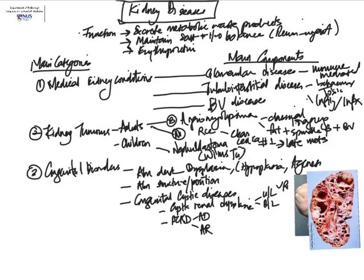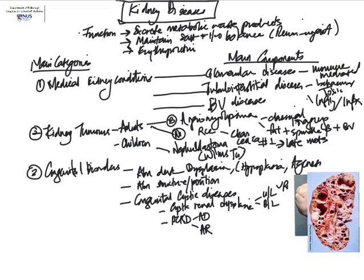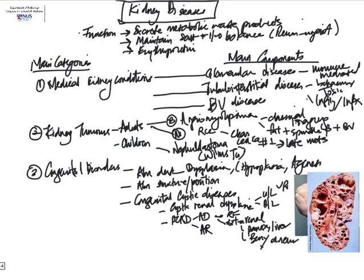It is important to note the extra-renal manifestations of autosomal dominant polycystic kidney disease, which include cysts within the pancreas and liver. Also notable is the development of vascular abnormalities, such as berry aneurysms within the circle of Willis at the base of the brain, which can give rise to potentially fatal subarachnoid hemorrhage. The next condition is medullary sponge kidney, which may only be incidentally found in adulthood and is usually accompanied by relatively normal renal function.